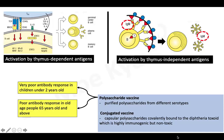In the thymus-independent mechanism, no memory B cells are differentiated. That's why antibody response is poor in older adults and doesn't last long, and is very poor in young children. Moreover, B cell activation by the thymus-dependent mechanism is several times stronger than the thymus-independent mechanism. That's why we need to give conjugate vaccine to children under 2 and adults 65 years and above who have weak immune responses.